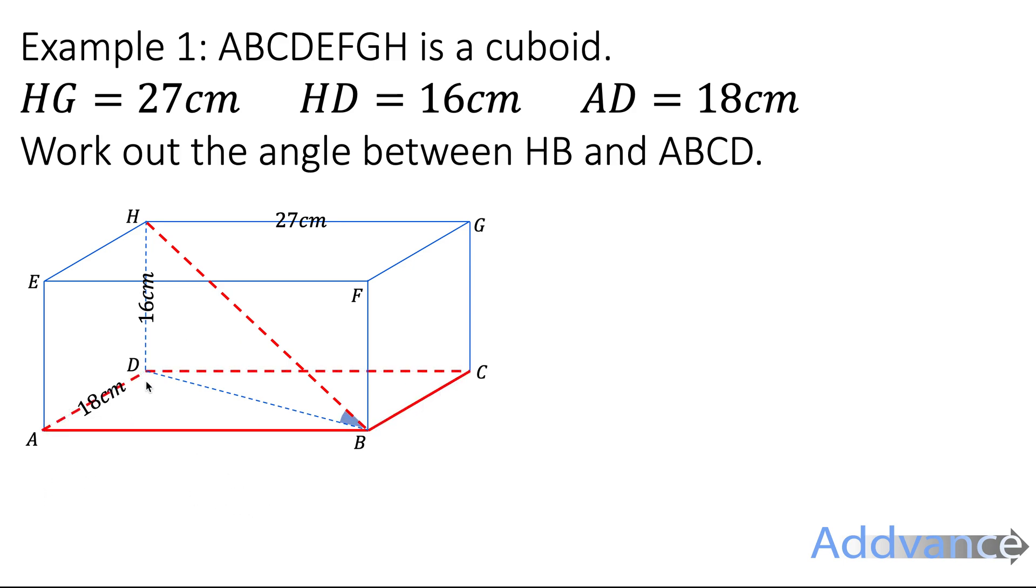So HB is this red line here going through the middle, from H to B. And then ABCD is the face on the bottom of the cuboid. Now the angle between these two is the smallest angle possible, and that is this angle here. And the reason it's that angle is because this line, DB, is directly below HB. And so this line here is the line on the base which is directly below HB. And so we choose that line to find the angle between. So we're trying to find this blue angle here. To do that, we're first going to work out another side of this triangle in the middle, and then we're going to use trigonometry to find that angle.